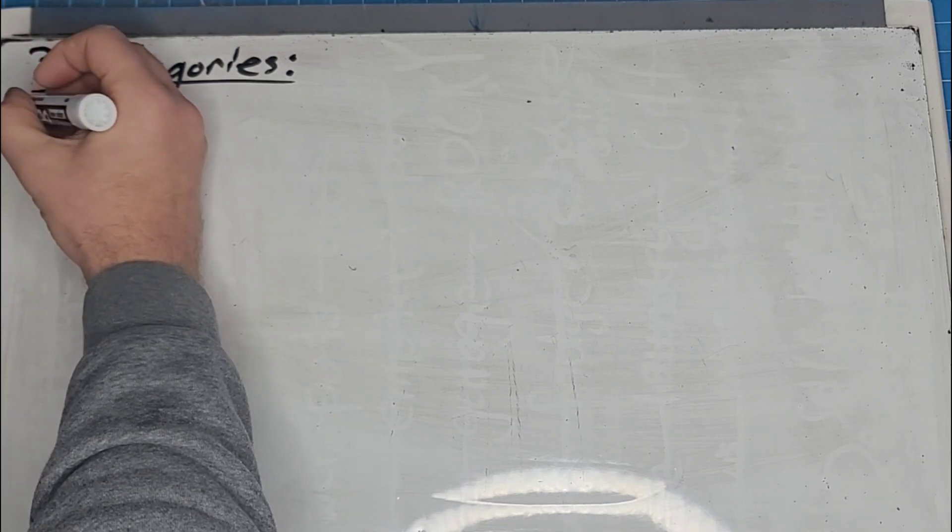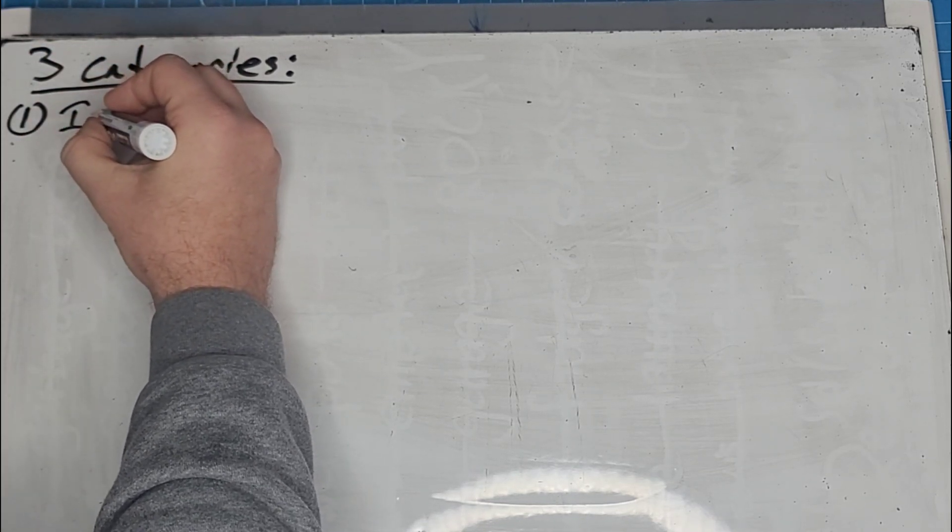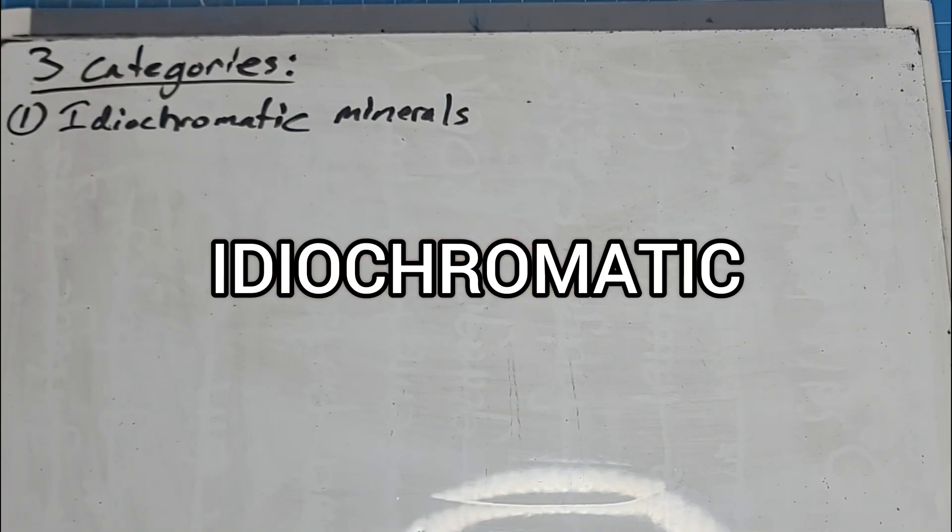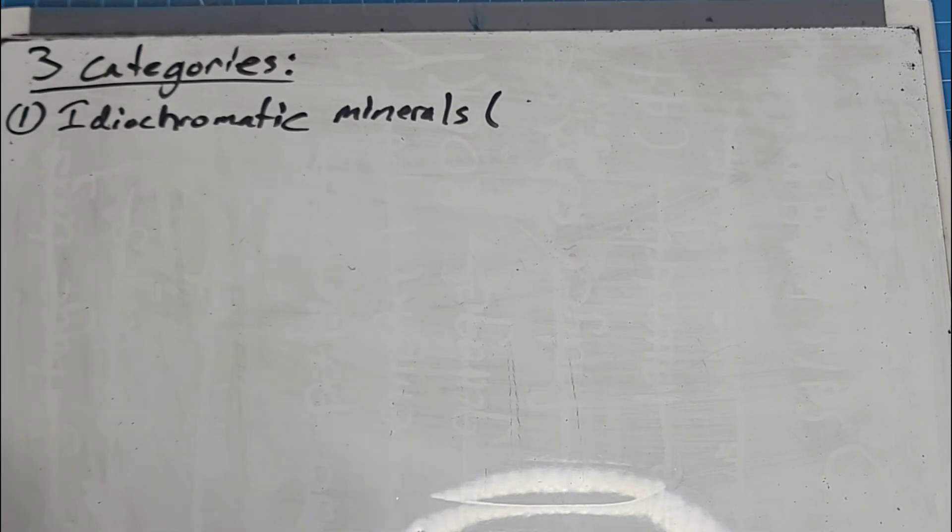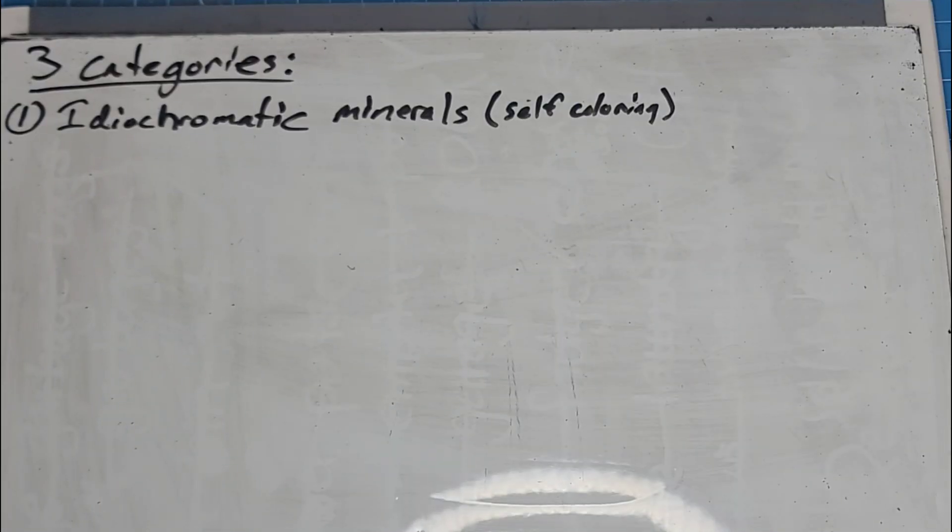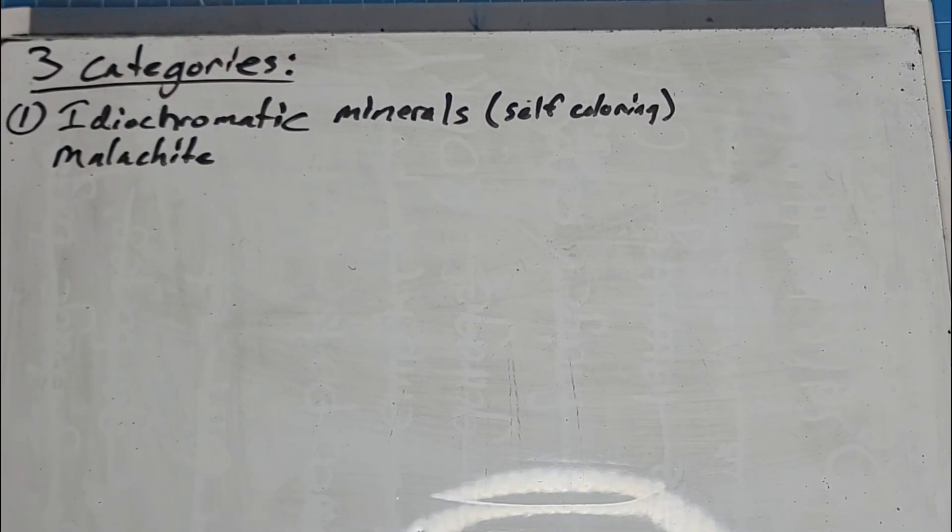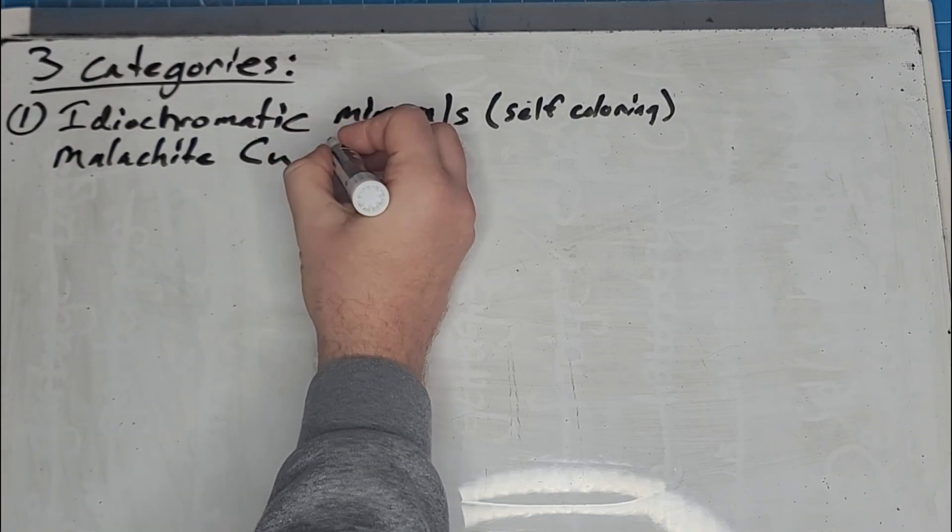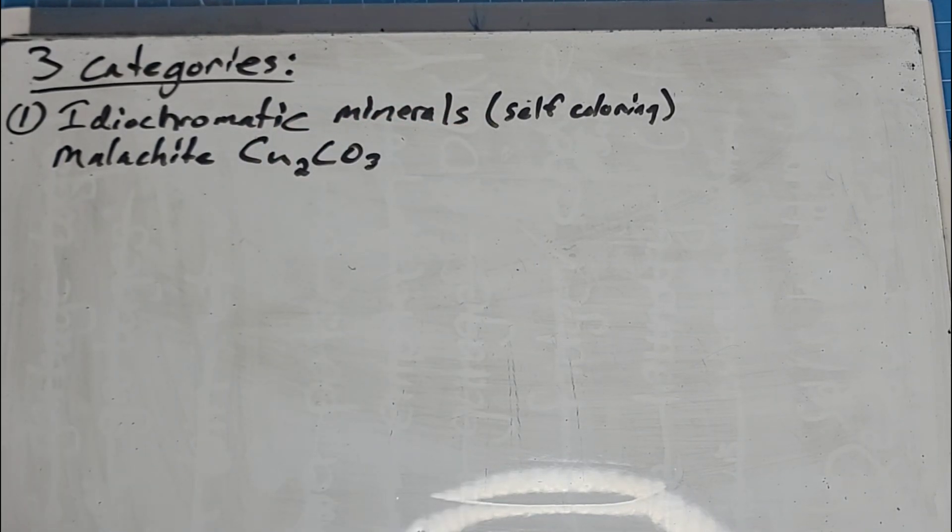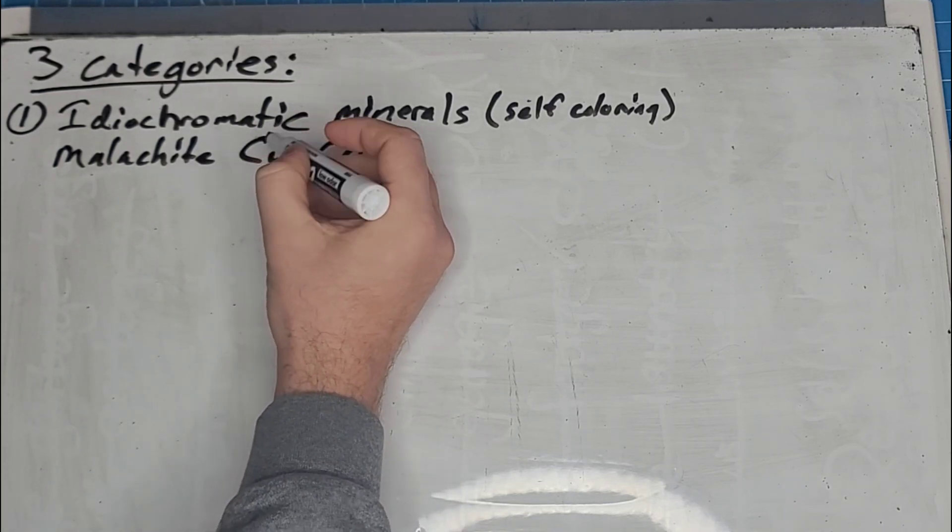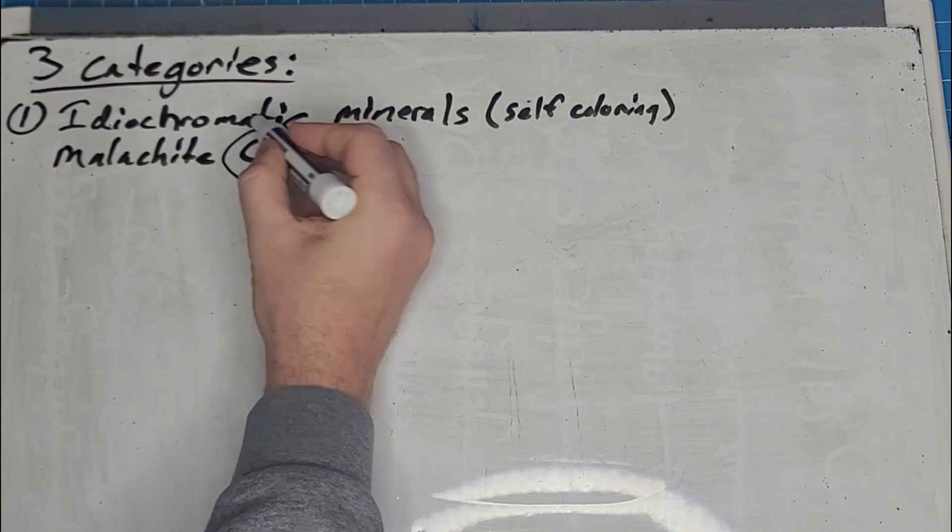So the first category we're going to dump some minerals into is a category called idiochromatic. These are also referred to as self-coloring minerals. An idiochromatic mineral, the chemical makeup of the mineral determines the color of the gem or the mineral that you're looking at. So for example, malachite. Malachite has a chemical formula of Cu2CO3. So it's a copper carbonate. As you can see, it has copper in its chemical formula.